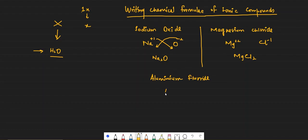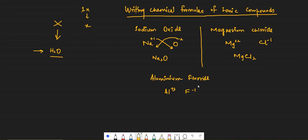Aluminium has a plus 3 charge and fluorine has a minus 1 charge. Just remember that when a substance name ends in '-ide', it's usually a negative ion — like fluorine becomes fluoride, oxygen becomes oxide, sulfur becomes sulfide, and so on. Fluoride is fluorine that has gained one electron. So 1 goes here and 3 goes here, giving the chemical formula AlF3.